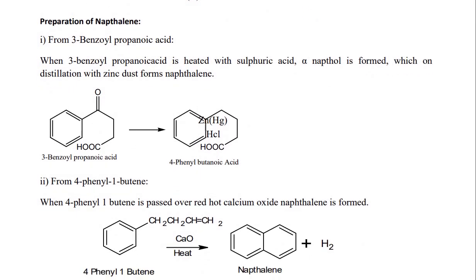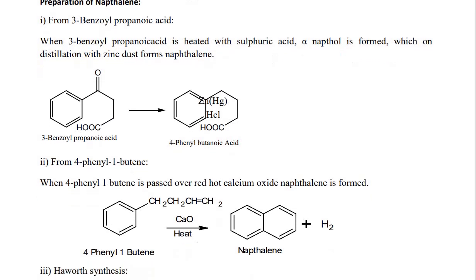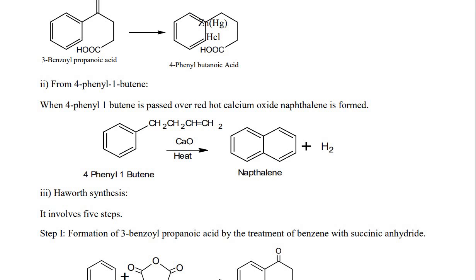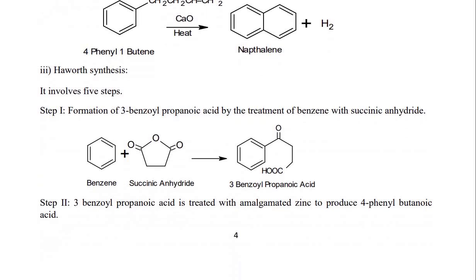Preparation of naphthalene from 3-benzoylpropanoic acid: when 3-benzoylpropanoic acid is heated with sulfuric acid, alpha-naphthol is formed, which on distillation with zinc gives naphthalene. Alternatively, 3-benzoylpropanoic acid gives 4-phenylbutanoic acid, then 4-phenyl-1-butene. When 4-phenyl-1-butene is passed over red-hot calcium oxide, naphthalene is formed after removal of hydrogen.